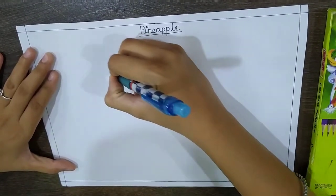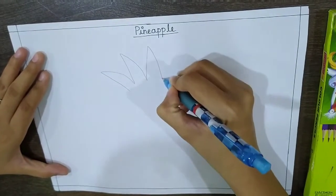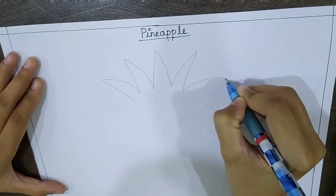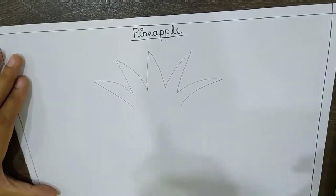First, draw zigzag this way. Yes, tell me in which color are these leaves of pineapple? Green.